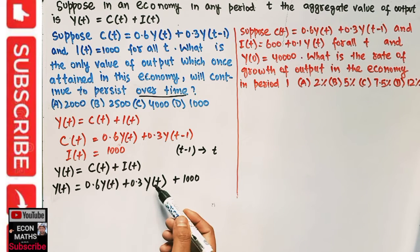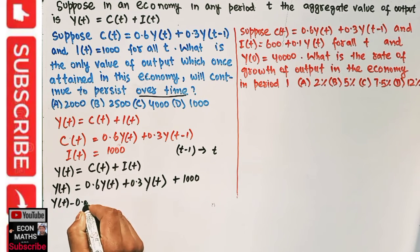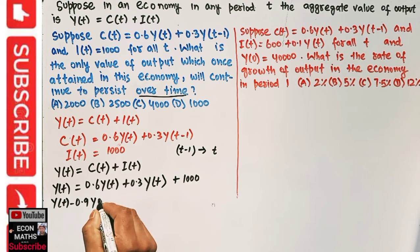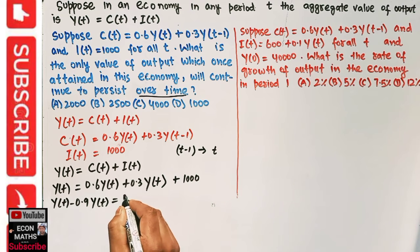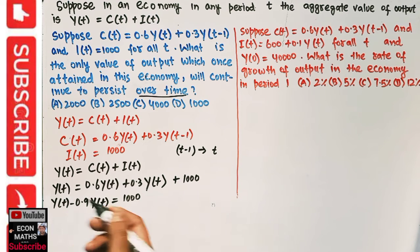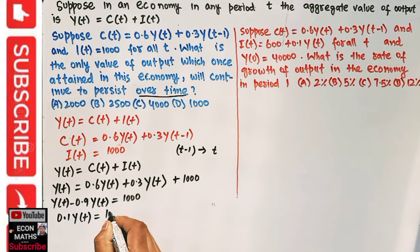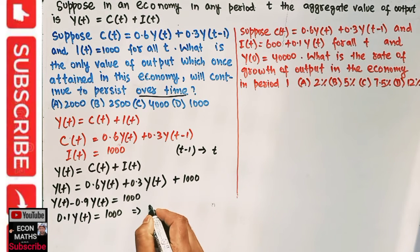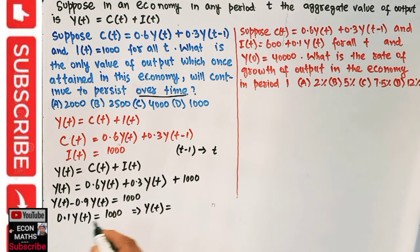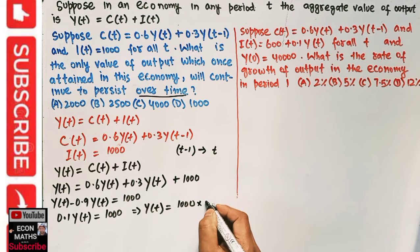We have 0.6Yt + 0.3Yt = 0.9Yt. Transposing: Yt - 0.9Yt = 1000, which gives 0.1Yt = 1000. This implies Yt = 1000 / 0.1, which can be written as 1000 × (10/1), giving us 10,000.